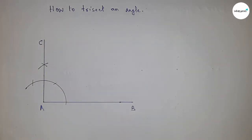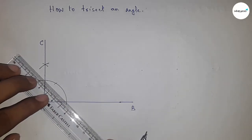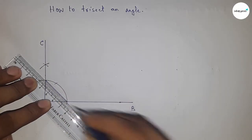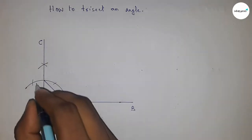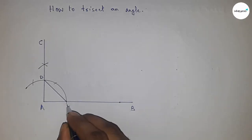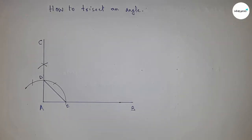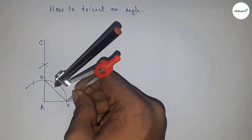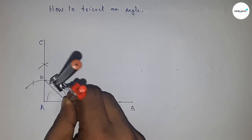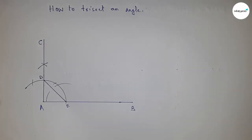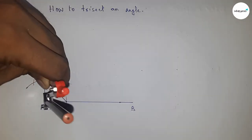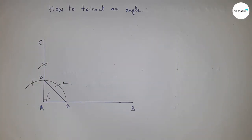Now I have to trisect the angle. Joining this to get line DE. Next, bisecting the DE line — taking greater than half of DE and drawing an arc here, and drawing an arc here, then with the same length putting the compass here and cutting here and here.